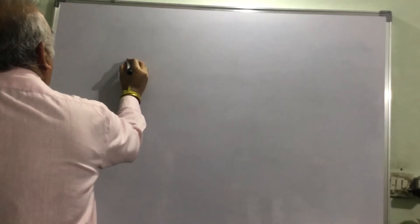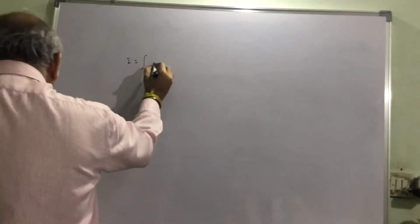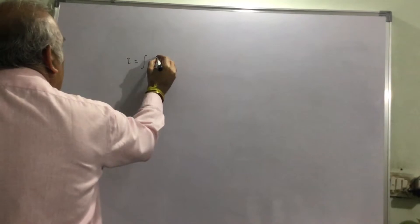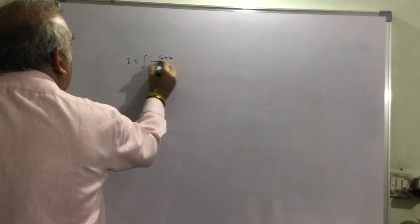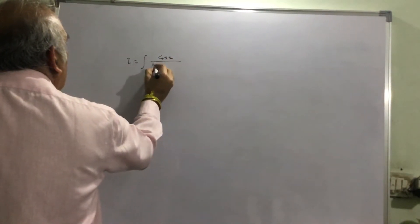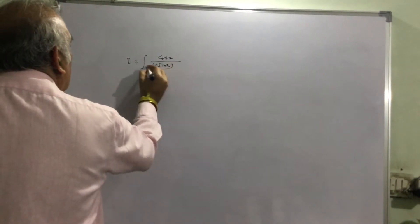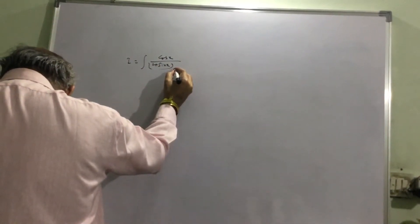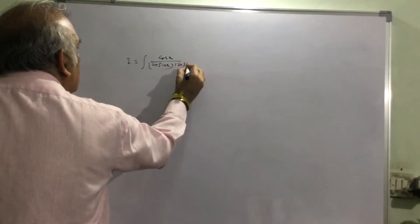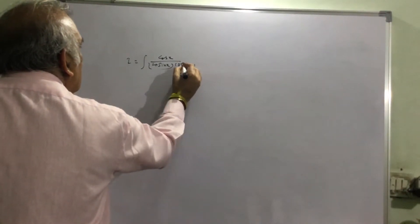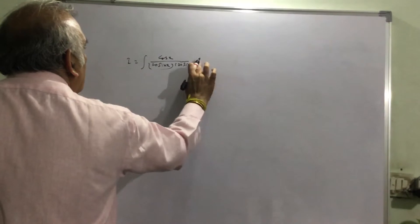We have to evaluate the integral I equals cos x divided by (1 plus sin x) into (2 plus sin x) dx.